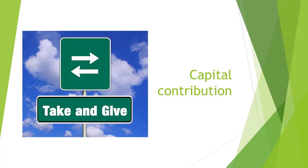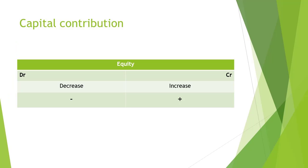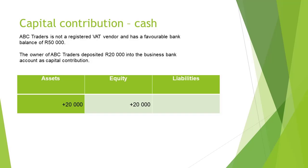Good day. In this short video, we will have a look at the effect on the accounting equation when the owner of a business makes a capital contribution. When an owner contributes capital to the business, it will increase equity on the credit side, since the rule for equity is that it increases on the credit side and decreases on the debit side. Let's look at an example.